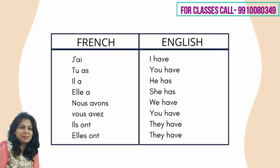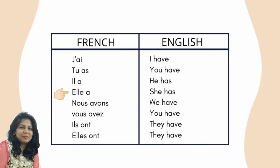So the avoir verb is conjugated as: j'ai, tu as, il a, elle, nous avons, vous avez, ils ont, elles ont.